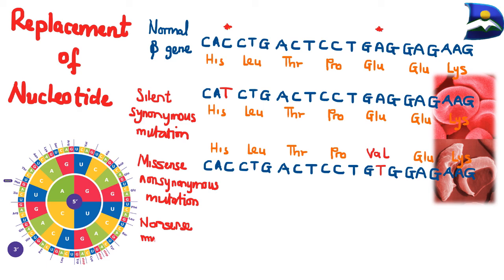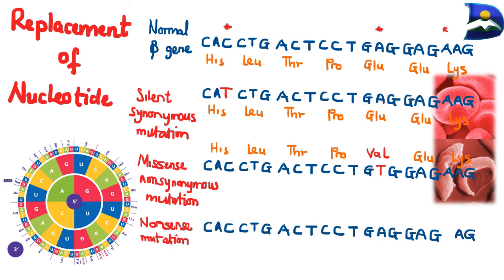The other type is called the nonsense mutation. The nonsense mutation results in a process that leads to a stop codon — where an A replaces the T at the last specific codon, we actually get TAG as a stop codon. This gives us insight into the three types of nucleotide replacement mutations.